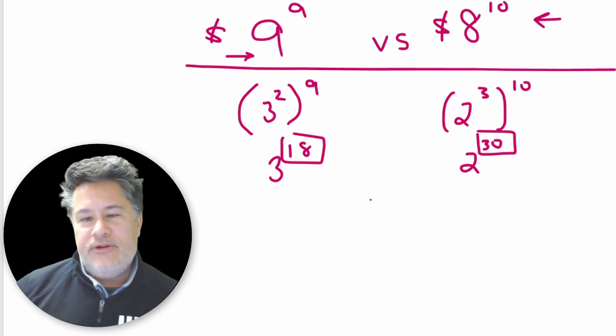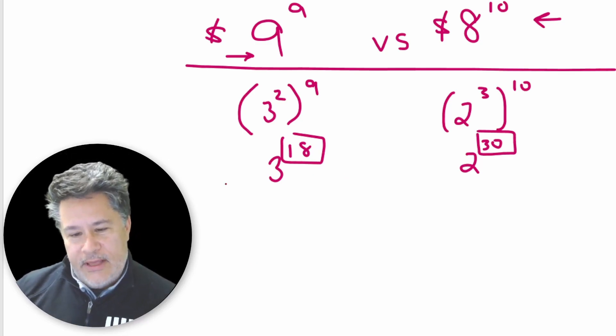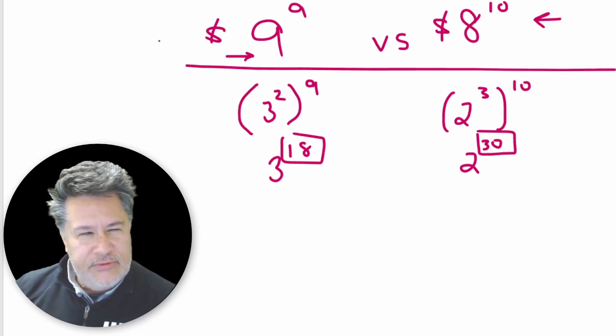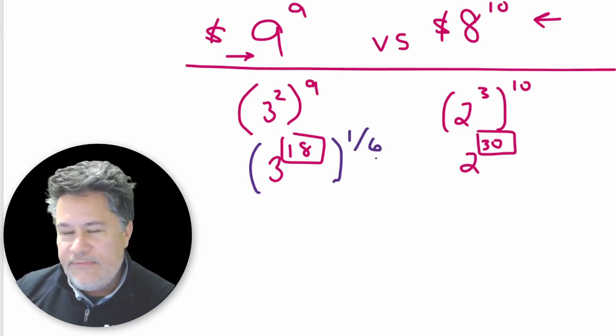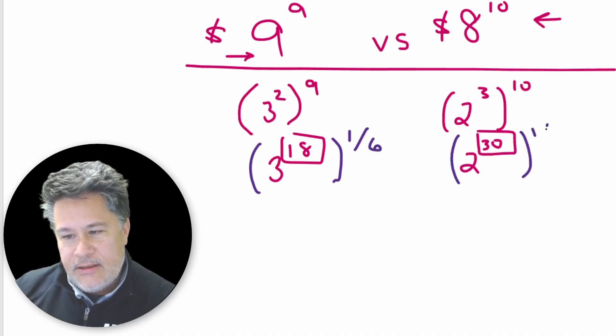So what do you guys think we could do to both sides of those expressions? Well, if you said take the sixth root, you're 100% correct. So let's go ahead and just change our pen color here. And let's raise these both to the one-sixth power. So we're effectively taking the sixth root. And look at what happens.